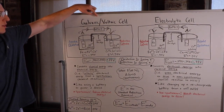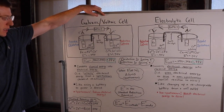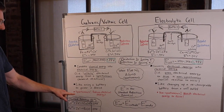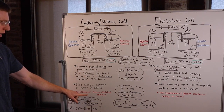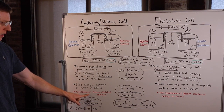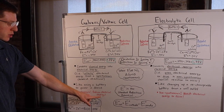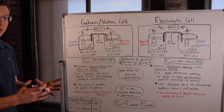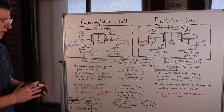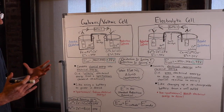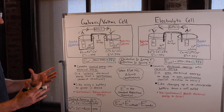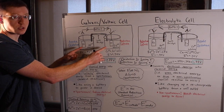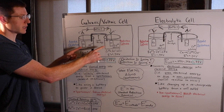Starting with the galvanic or voltaic cell, the most important thing you need to know is that it is a spontaneous process and it produces electrical energy that we can harness. The electrical energy is coming from the chemical energy of the redox reaction occurring here.